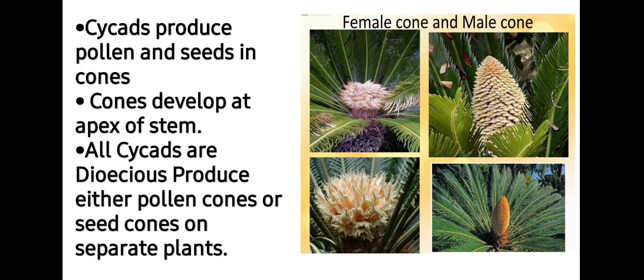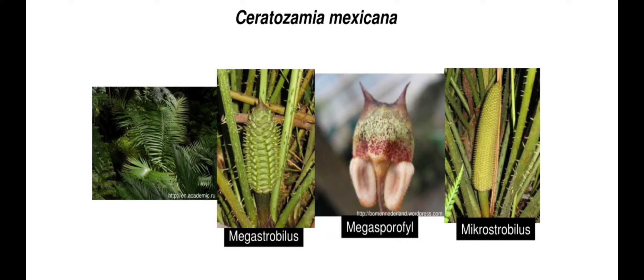Sexual reproduction occurs with the help of pollen grains and seeds. Cycads produce pollen and seeds in cones. Cones develop at the apex of the stem. All cycadales are dioecious, meaning they produce either male cones or seed cones on separate plants, as you can see in these images. Here is an image of Ceratozamia mexicana showing the mega and microstrobilus.